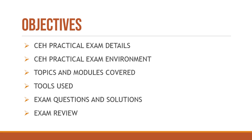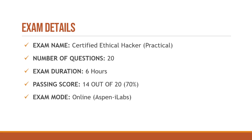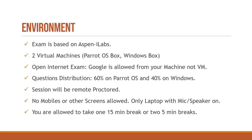For exam details: there are 20 questions and the passing score is 70%, so you need to get a minimum of 14 out of 20 correct answers. Exam duration is 6 hours, which is more than enough. The exam mode is online and it is on Aspen's iLabs.